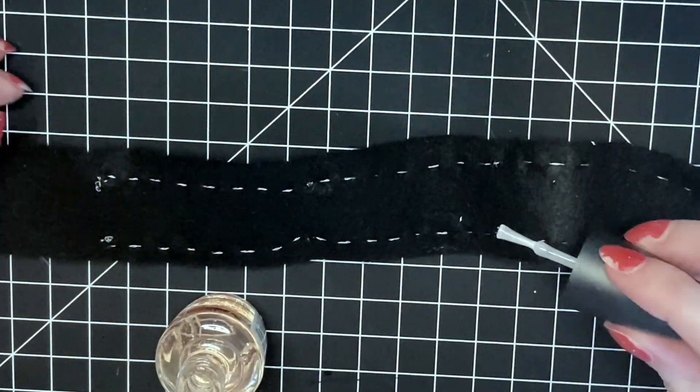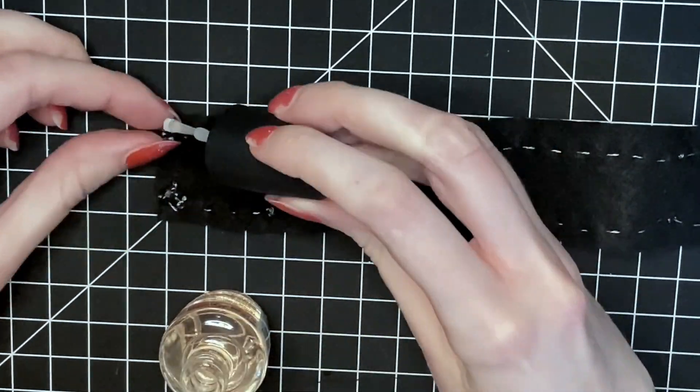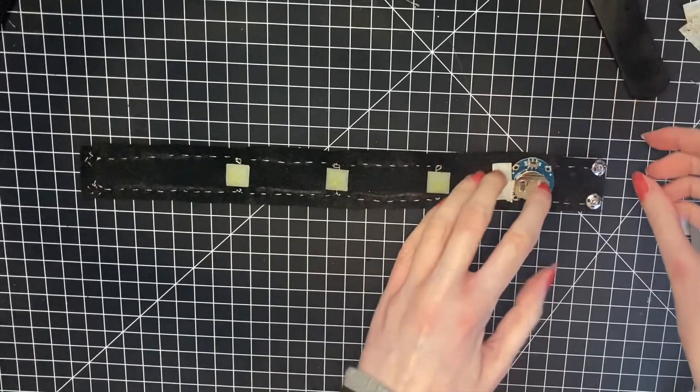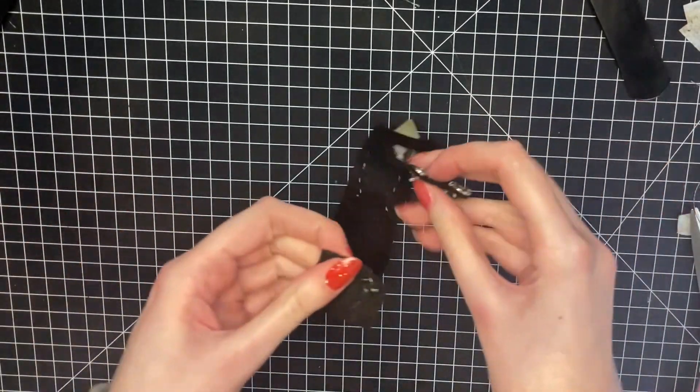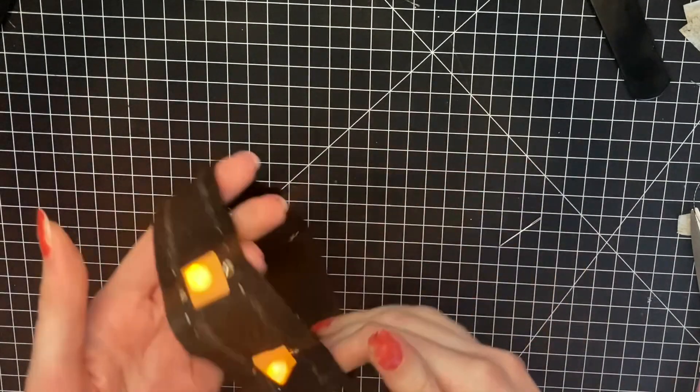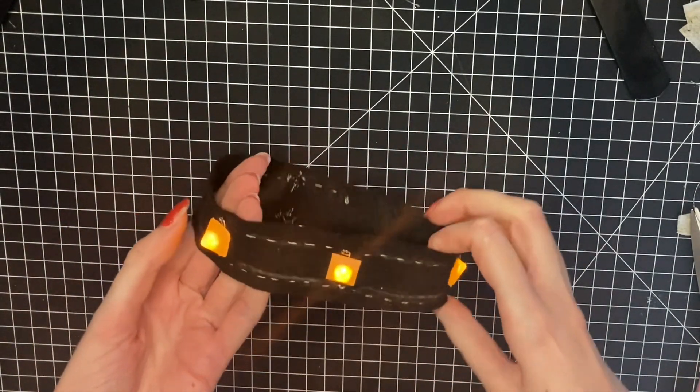And just finishing the knots with some nail polish to keep them secure. And it's also a good idea to check that the necklace is working by switching it on and closing the snaps. So once they're all connected it should turn on like this.